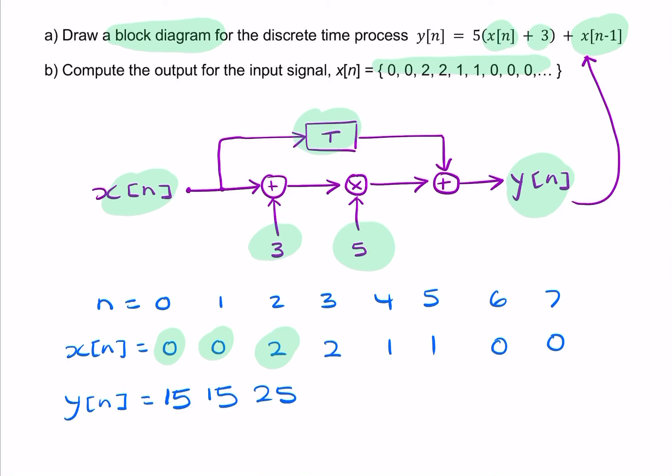So the next value for y is when n equals 3. When n equals 3, x is equal to 2. So we have the same again: 2 plus 3 is 5, 5 times 5 is 25. But now the previous value of x is no longer 0, it's 2. So now we have 25 plus 2, which is 27. So our value of y is now 27.